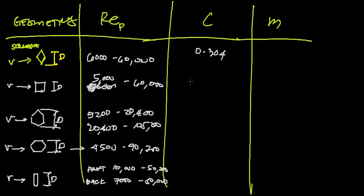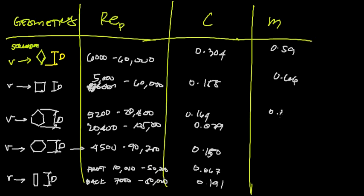The value of C of those geometries: we have 0.304, 0.158, 0.164, 0.039, 0.150, 0.667, 0.191. And for our M: 0.59, 0.66, 0.638, 0.78, 0.638, 0.500, 0.667.